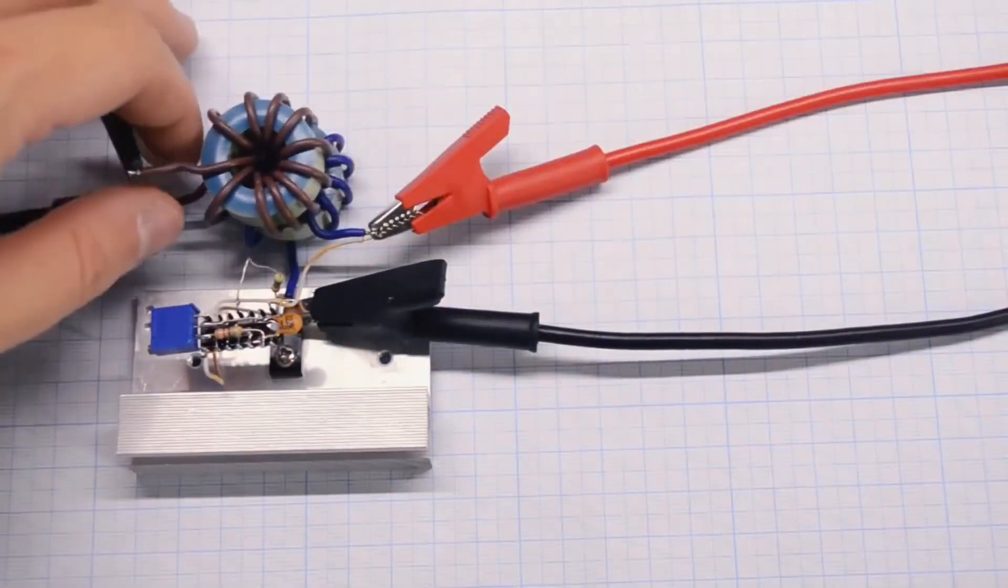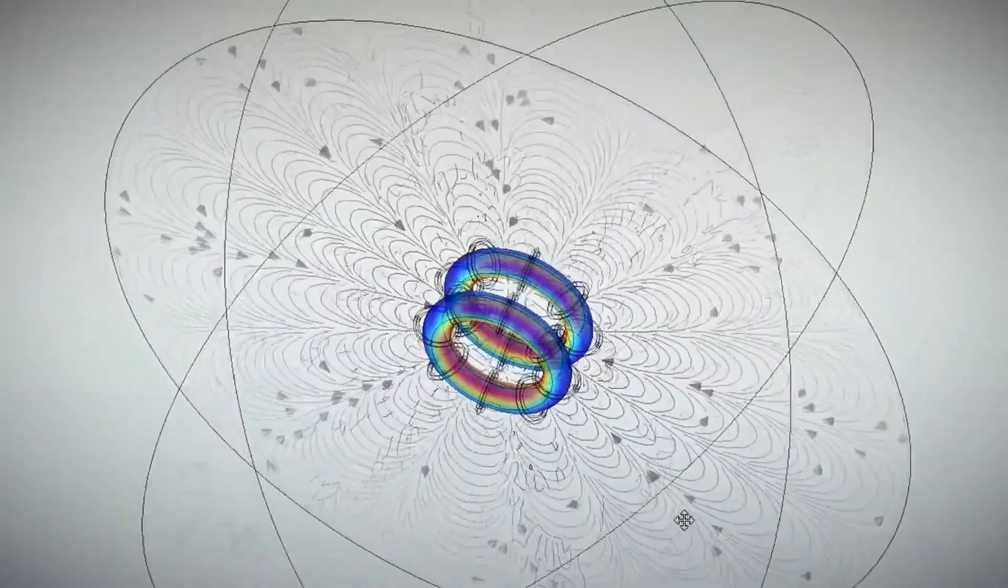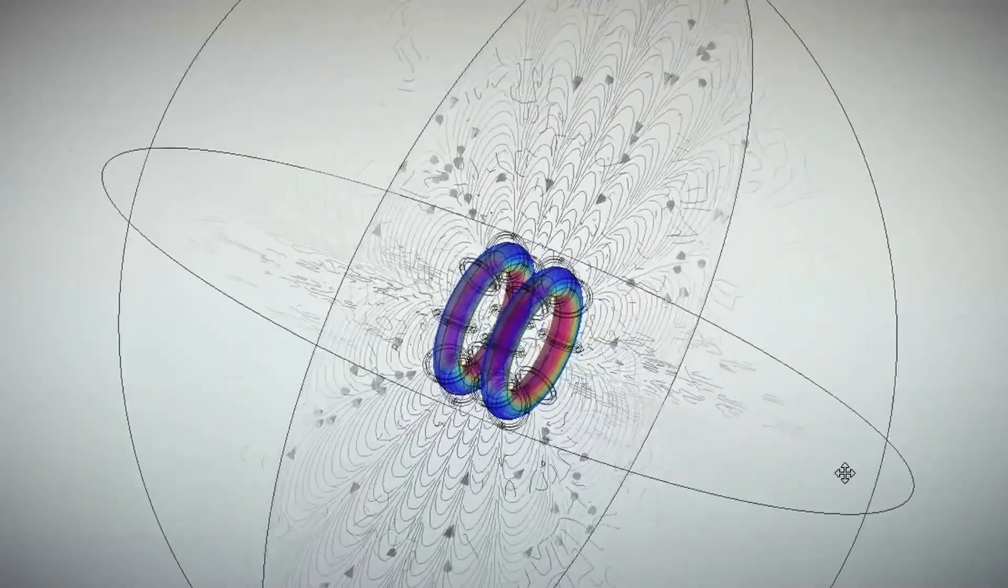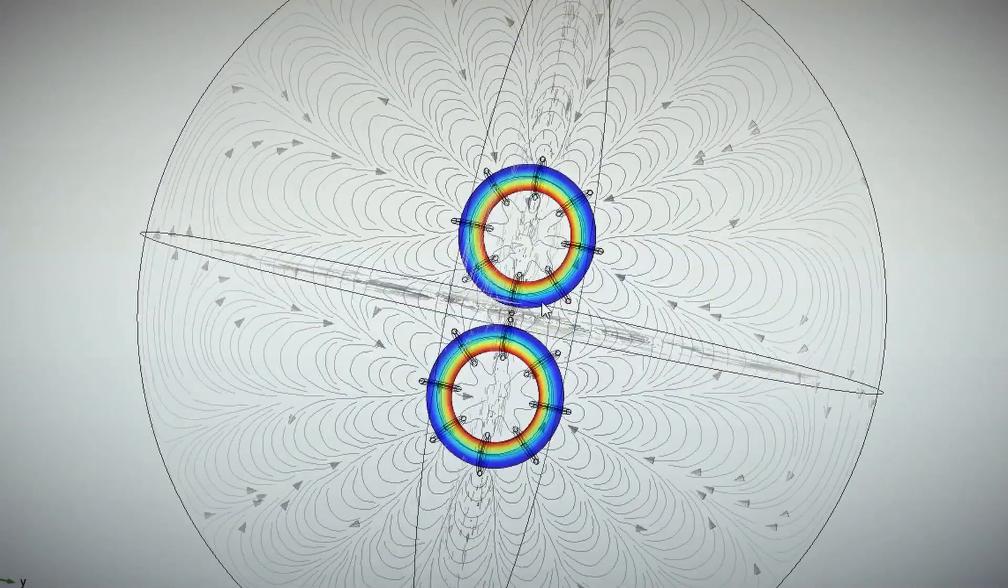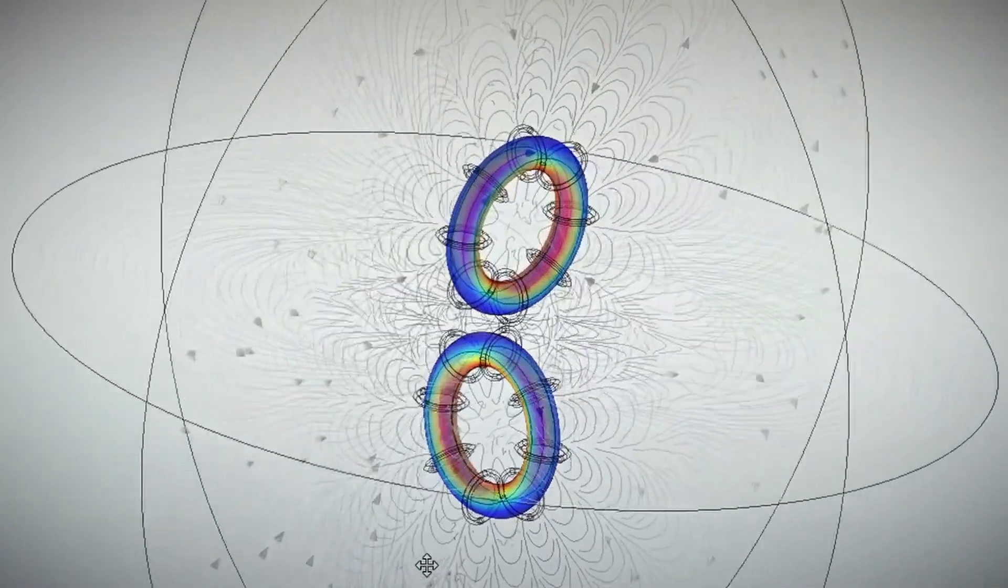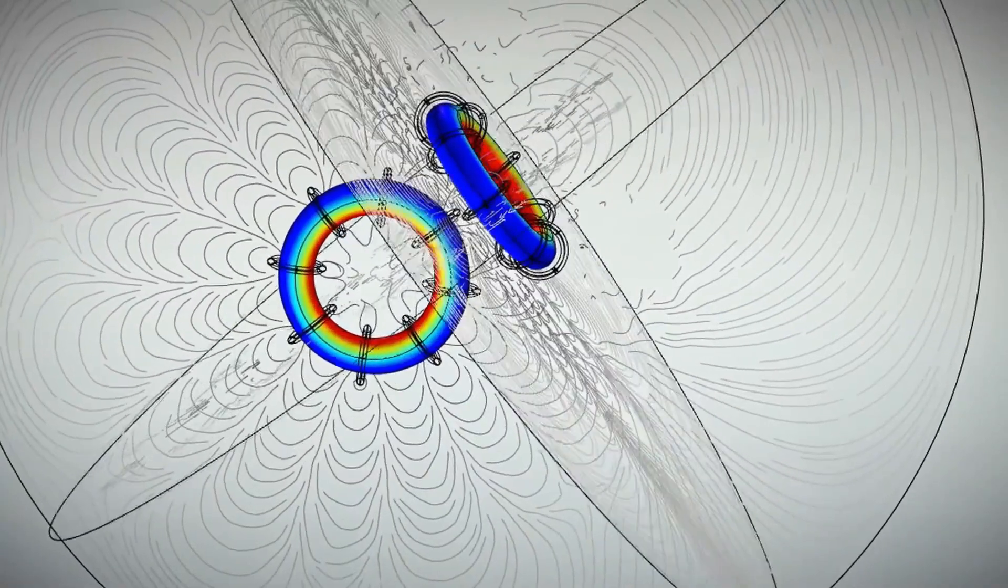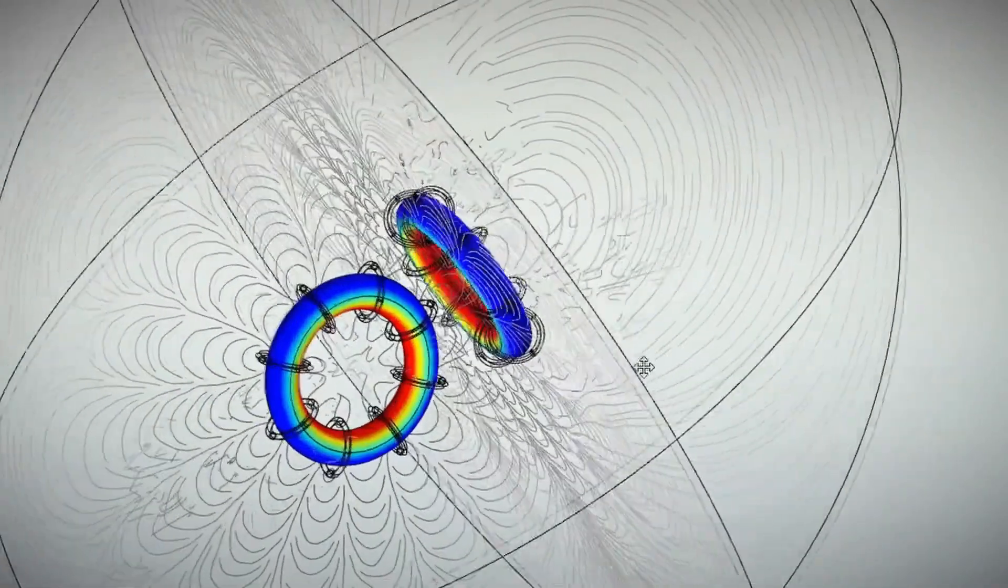Well, if you place two toruses closely together, you get the following images. Next, two toruses side by side. Position crosswise 1 and position crosswise 2. It is evident that the inductance fields interact.